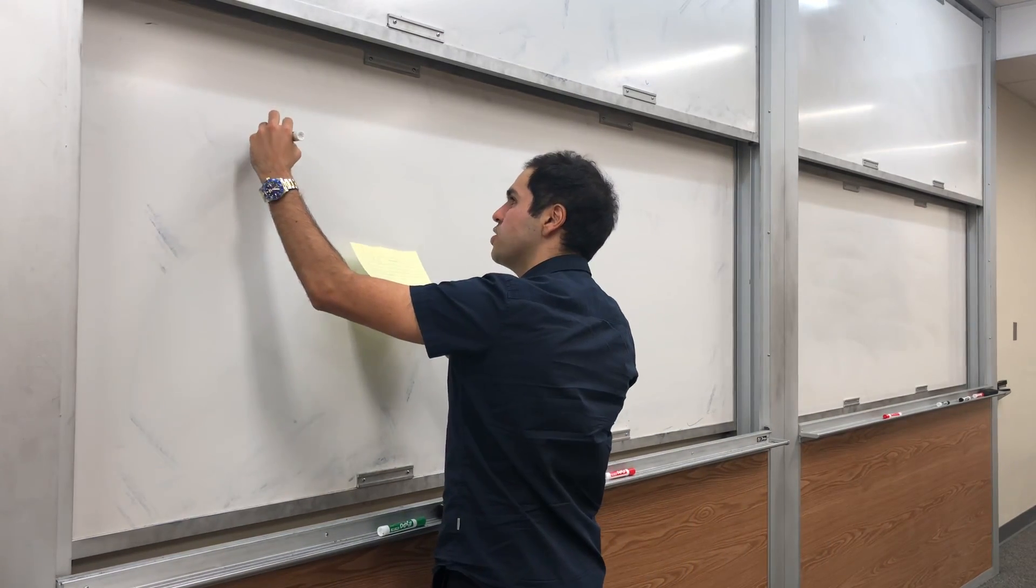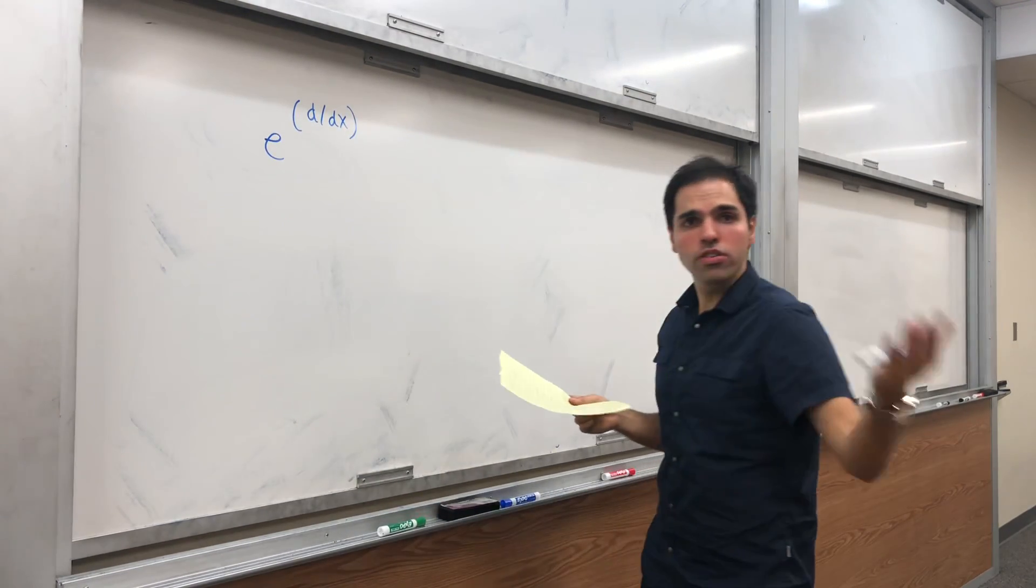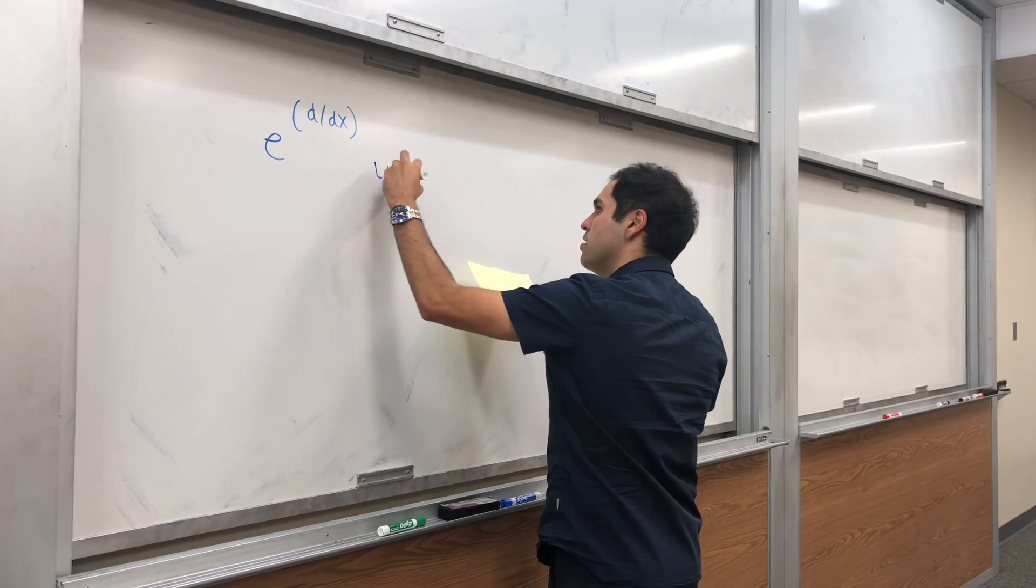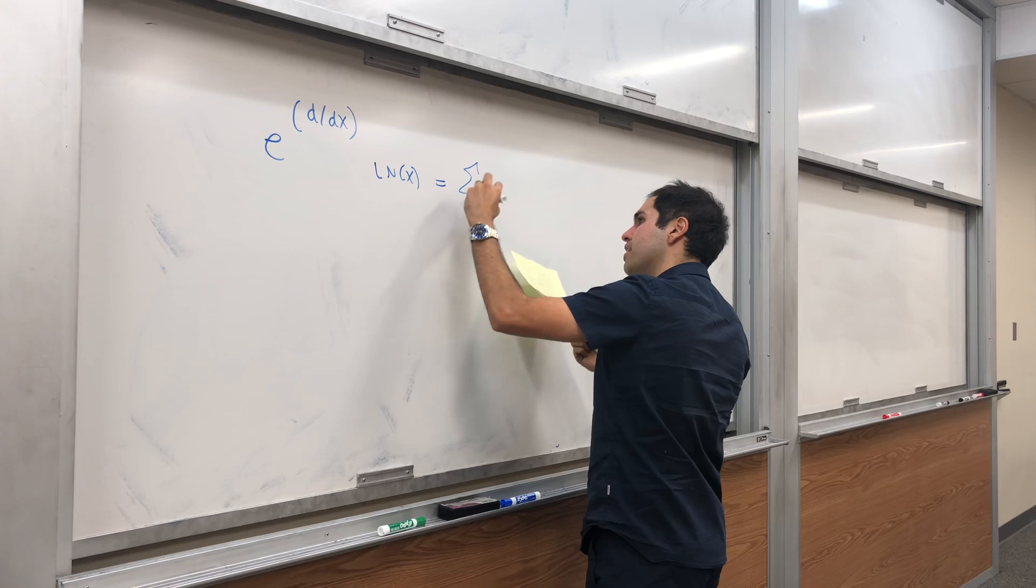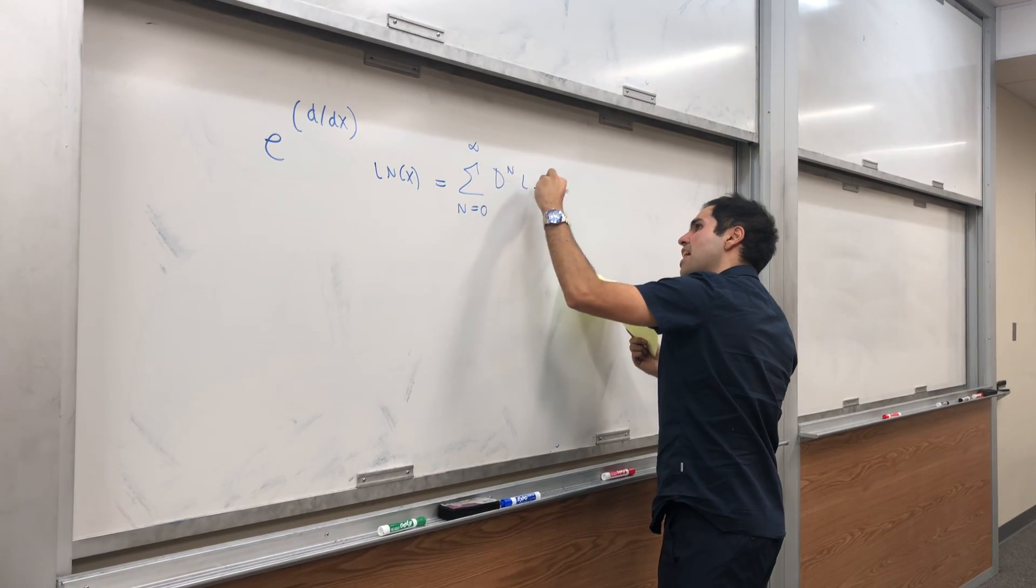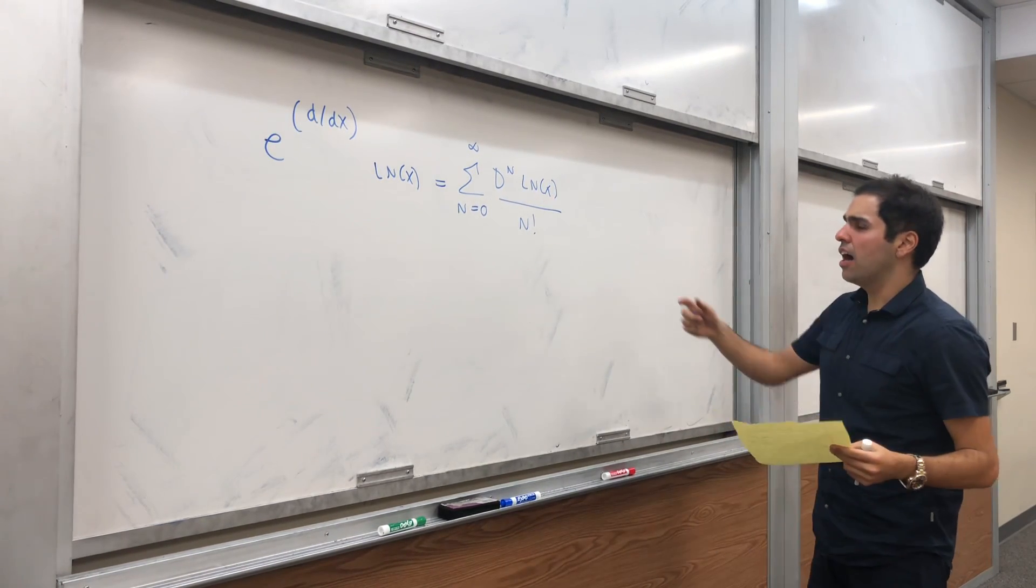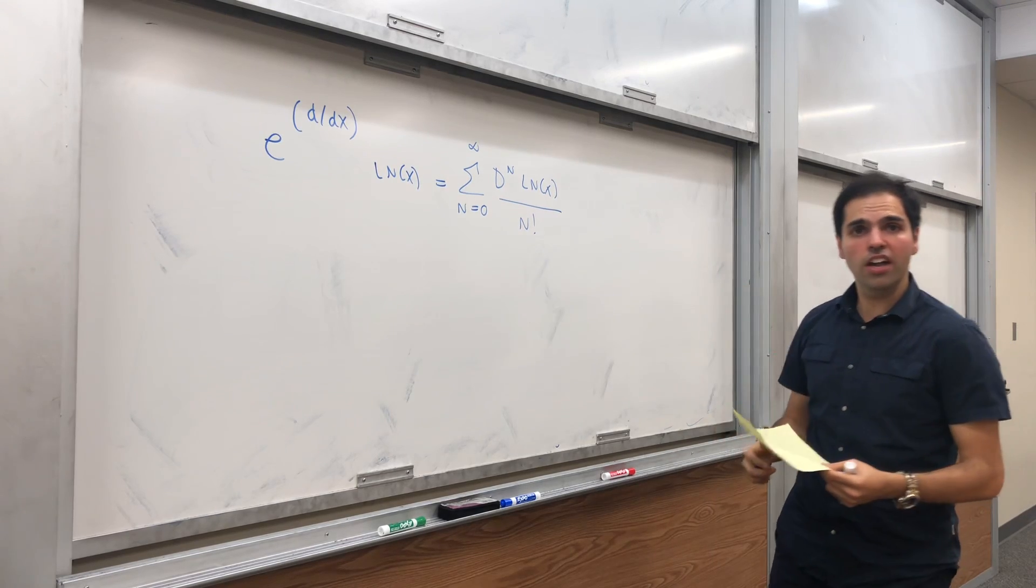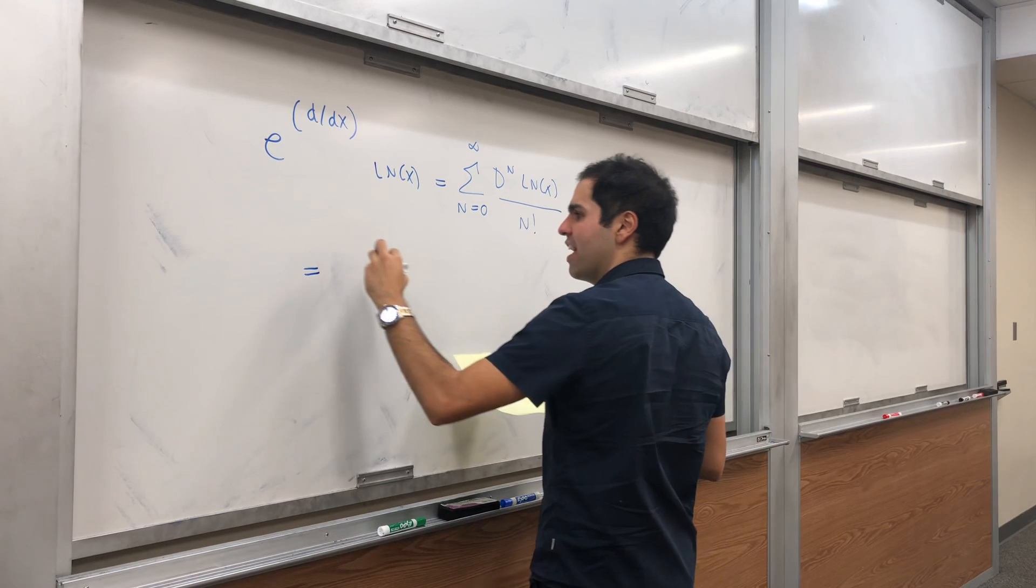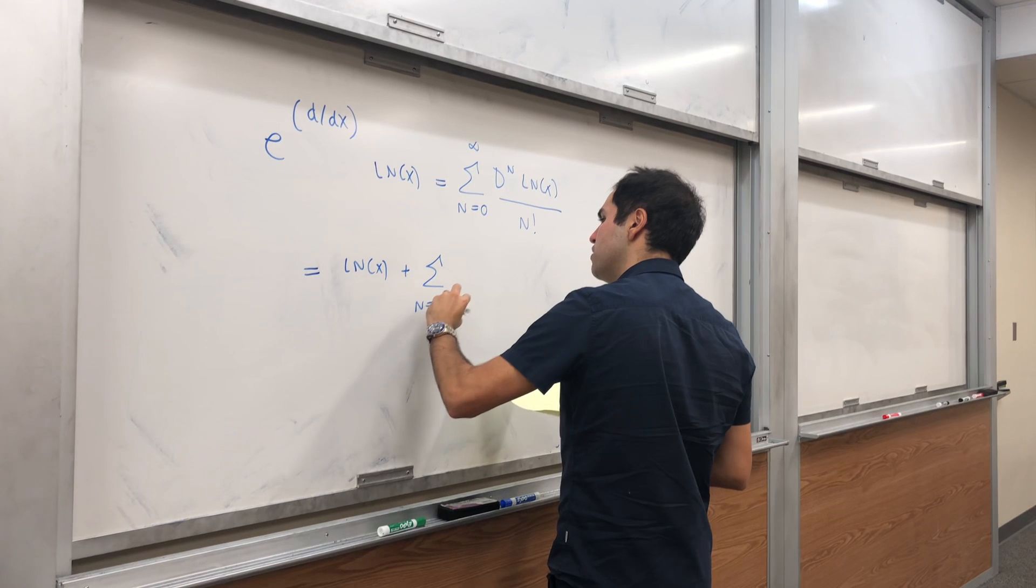what is the exponential derivative? By definition, it's just the power series of e^(d/dx), but with derivatives everywhere. So it's the sum from n = 0 to infinity of d^n ln(x) over n factorial. Now, the 0 term does nothing to ln(x), so let's separate it out. So it's d^0 of ln(x), which is just ln(x), plus the sum of a bunch of derivatives.